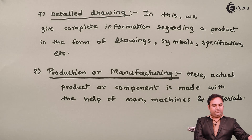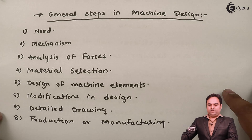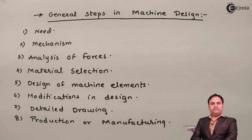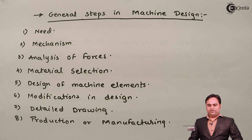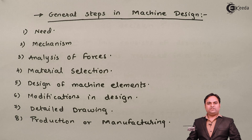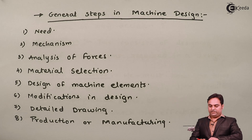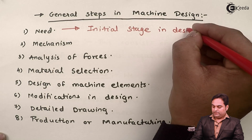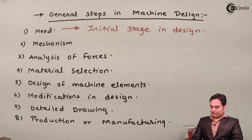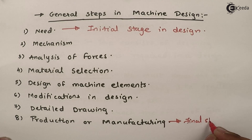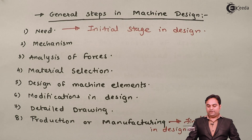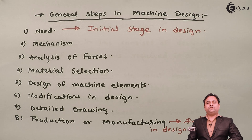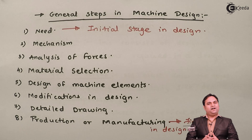So in this video we have seen the general steps in machine design. If we are designing any component, we follow these eight steps starting from need — the initial stage — up to production and manufacturing, which is the final stage. Starting from need and ending with production, we get the actual component, and that is machine design.